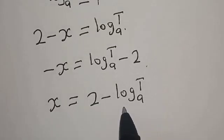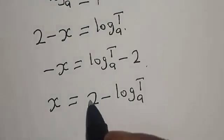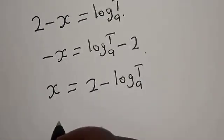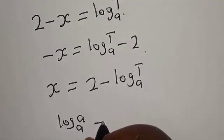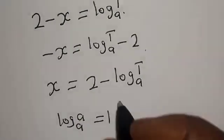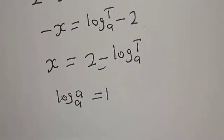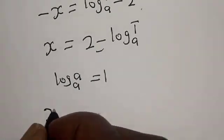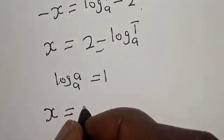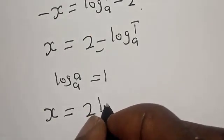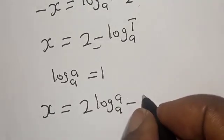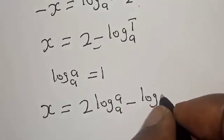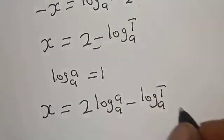Is this our final answer? No, this is not the final answer. Note that log a base a equals 1, so we can introduce it: s is equal to 2 times log a base a minus log t base a.